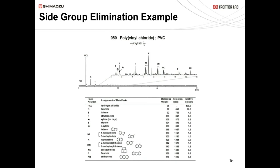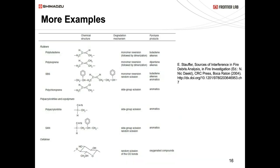For side-group elimination, PVC is the example. We talked about how the Cl gets separated from the side group of the actual polymer backbone to form HCl, and then the backbone of the polymer starts to create aromatic rings. These examples help you understand how different polymers may go through the pyrolysis process. It's very important to have a good understanding of your polymer's backbone while applying sufficient heat so you're not overheating or underheating your sample.